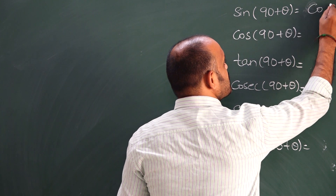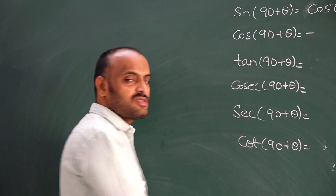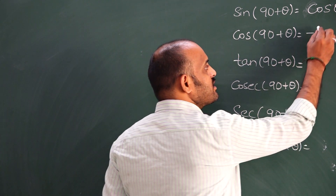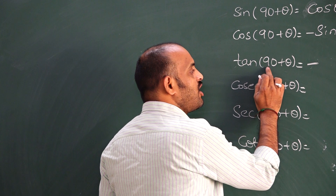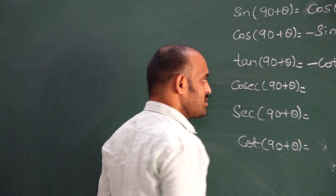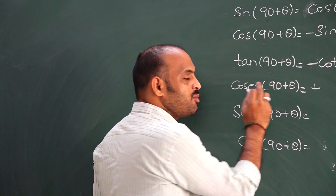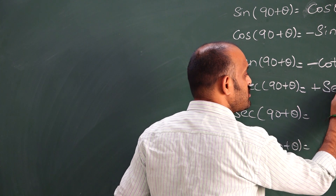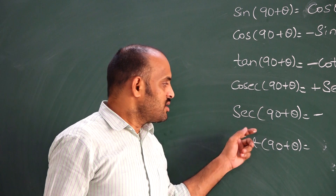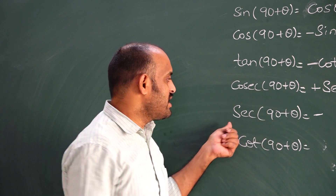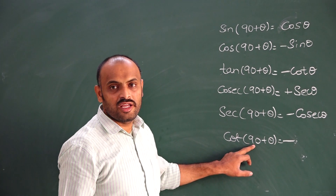So, sin(90+θ) = cos θ. For cos(90+θ): 90+θ is second quadrant, and in second quadrant cos is negative, so cos(90+θ) = -sin θ. For tan(90+θ): second quadrant, tan is negative, and for odd multiples of 90 tan becomes cot, so tan(90+θ) = -cot θ. For cosec(90+θ): second quadrant, cosecant is positive, and for odd multiples of 90 cosecant becomes secant, so cosec(90+θ) = sec θ. For sec(90+θ): second quadrant, secant is negative, so sec(90+θ) = -cosec θ. For cot(90+θ): second quadrant, cot is negative, so cot(90+θ) = -tan θ.